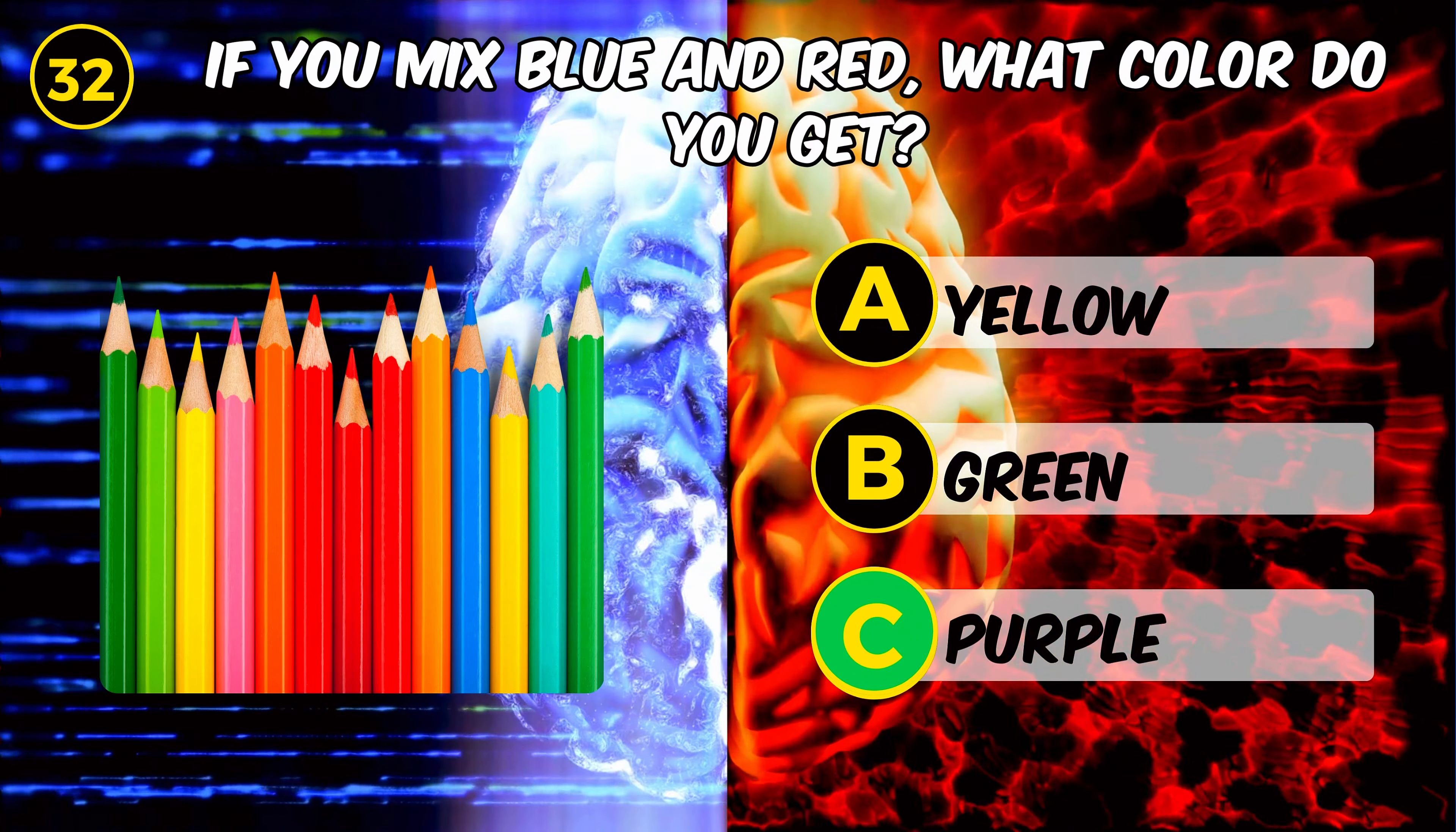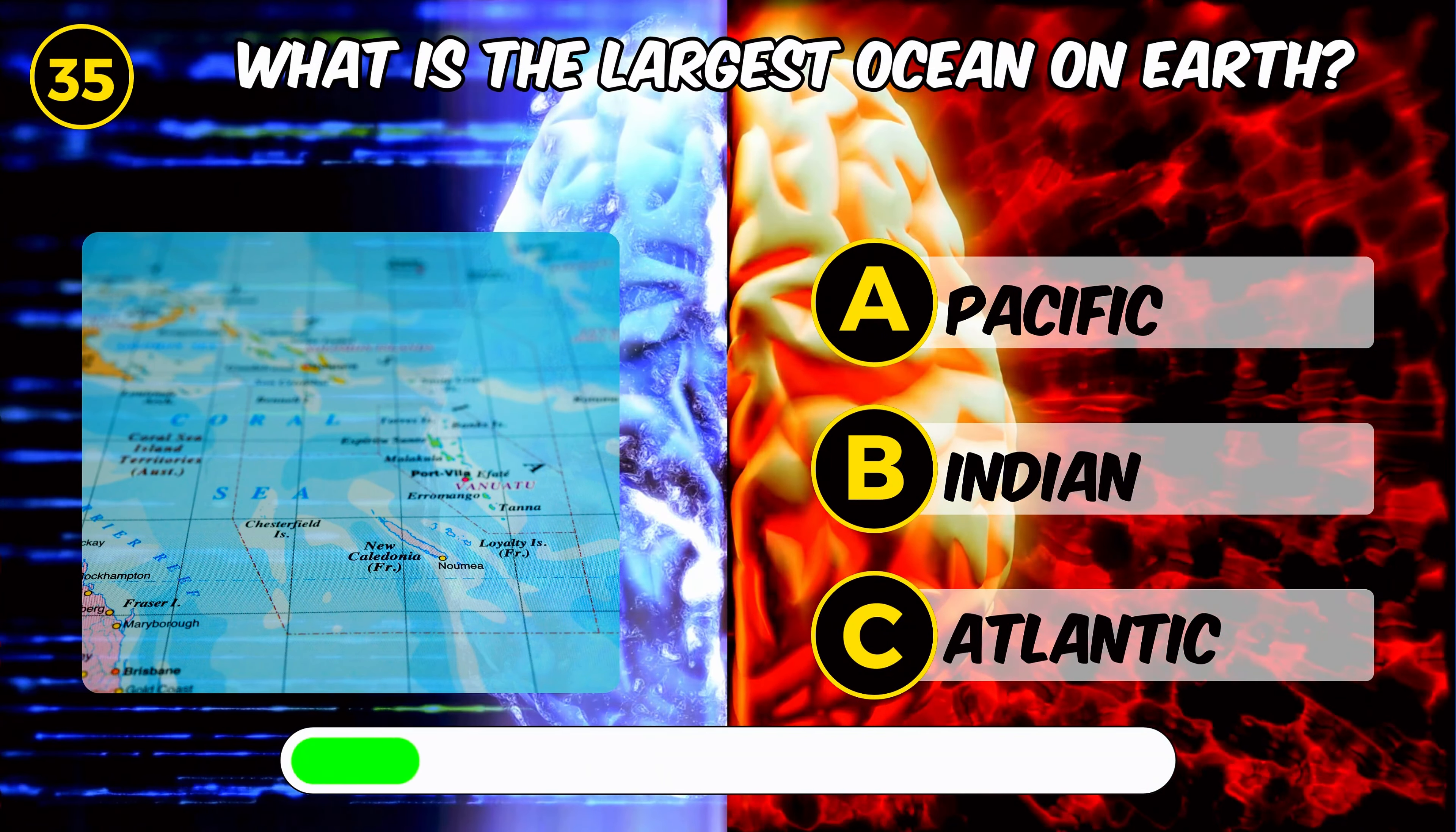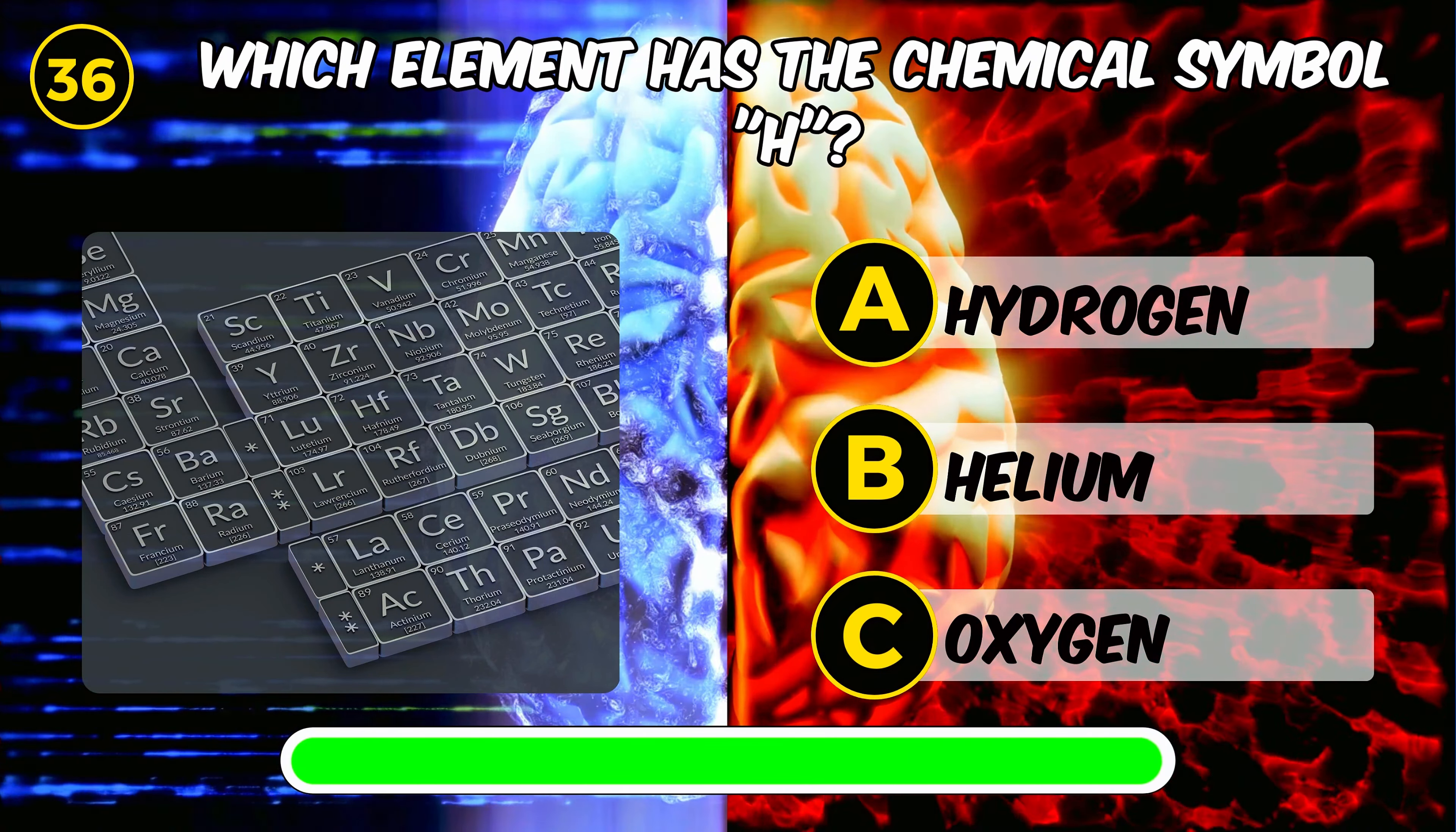How many sides does a square have? Four is the answer. What is the sum of 7 plus 9? 16. What is the largest ocean on Earth? Pacific. Which element has the chemical symbol H? Hydrogen.